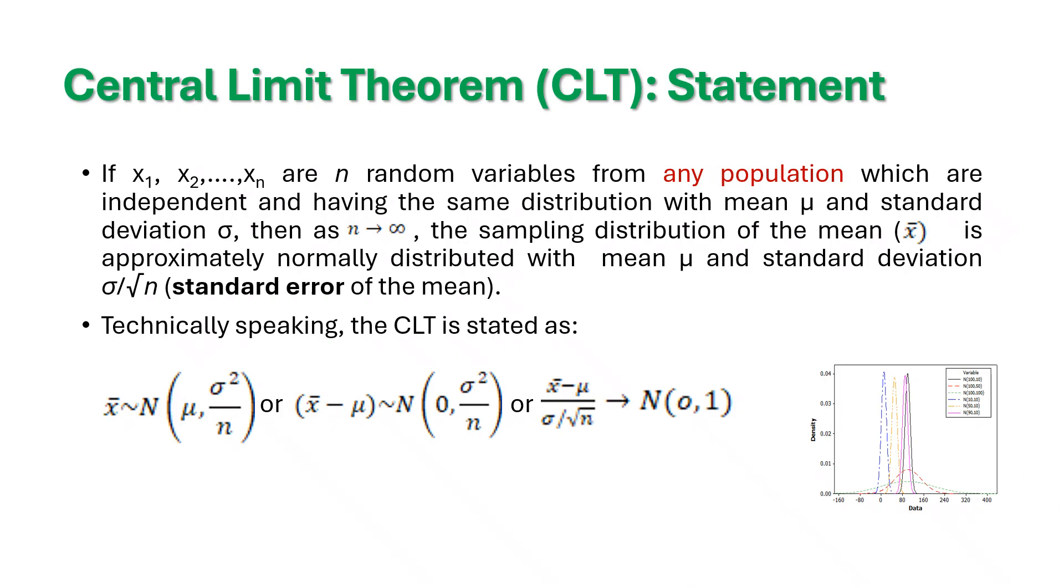Technically speaking, we can write it as x bar follows N(mu, sigma squared by n). Or x bar minus mu follows N(0, sigma squared by n). Or even you can write (x bar minus mu) by (sigma by root n) follows N(0,1). All these expressions are the same. It's pointing to the same.